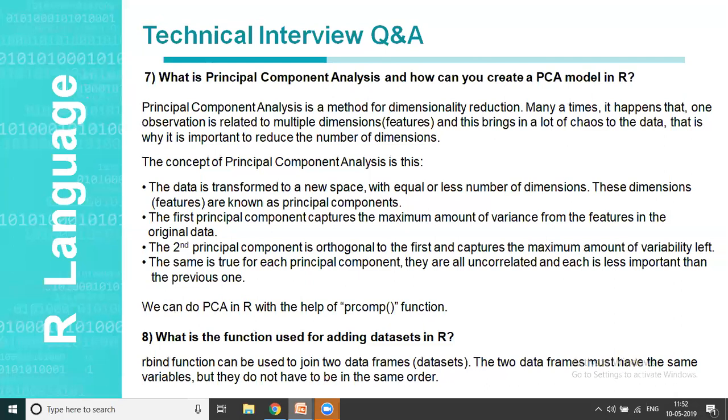The first principal component which is produced captures the maximum amount of variance. Similarly, the second captures the second most amount of variance. In this order, when the 10th principal component is captured, the 9th becomes less important. So each and every time a newer PC is captured, the older one becomes less important. The same is true for each and every principal component. They are all uncorrelated. And each and every time you move ahead, the last one becomes less important. And in order to achieve this functionality, that is PCA, you use PRCOMP. This is the function that's used.